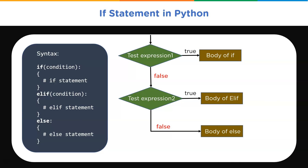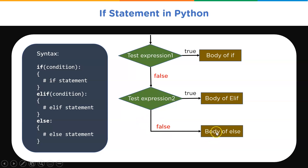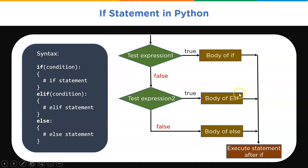Sometimes you want to evaluate a condition and take one path if it is true, but specify an alternative path if it is not. This is done with an else clause — the else code block will run if the expression is false. If the condition for the elif statement returns false, then we have the body of the else statement. Finally, after all the if, elif, and else statements have been executed, we will execute any other statements present outside the if condition.